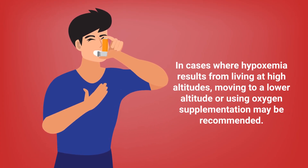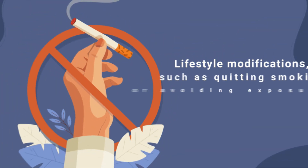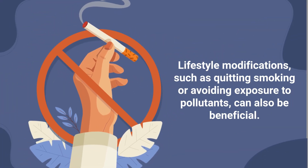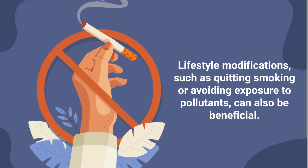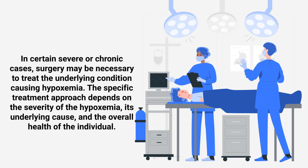In cases where hypoxemia results from living at high altitudes, moving to a lower altitude or using oxygen supplementation may be recommended. Lifestyle modifications, such as quitting smoking or avoiding exposure to pollutants, can also be beneficial. In certain severe or chronic cases, surgery may be necessary to treat the underlying condition causing hypoxemia. The specific treatment approach depends on the severity of the hypoxemia, its underlying cause, and the overall health of the individual.